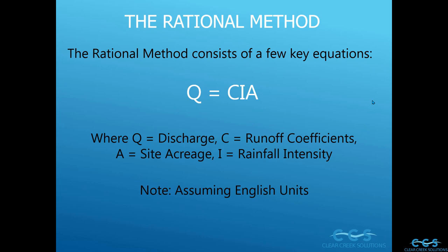Let's talk about the rational method. The rational method consists of a few key equations. We're going to talk about Q equals CIA, which most of you are familiar with. If you want to learn more about that basic equation, go watch our first video on it. Q equals discharge, C equals runoff coefficient, A equals site acreage, and I equals rainfall intensity. We are assuming English units — it is different for the metric system, but since we are based in the United States we'll be using English units.